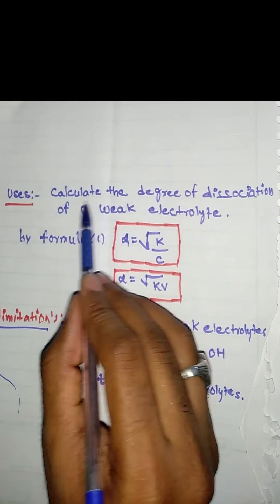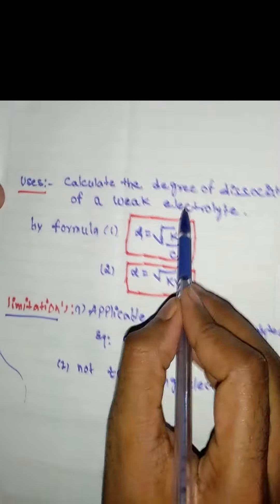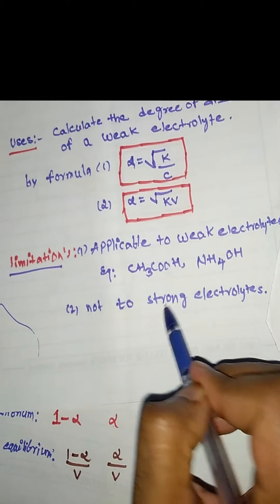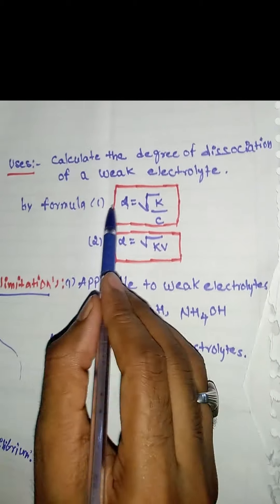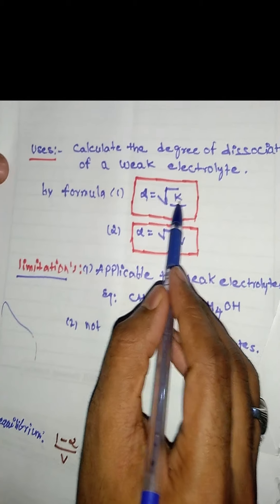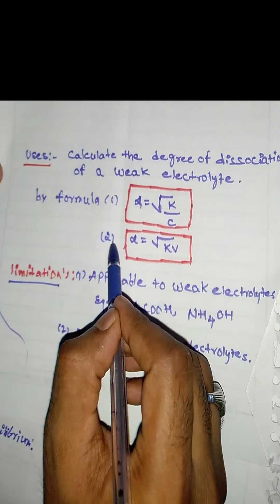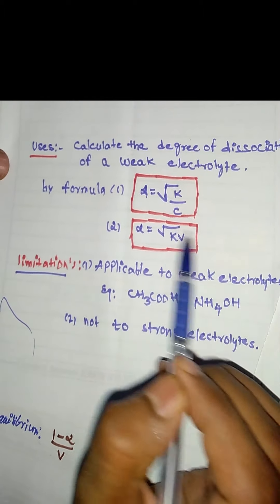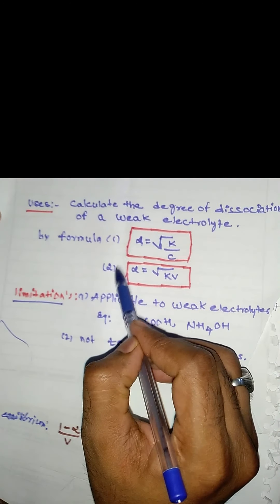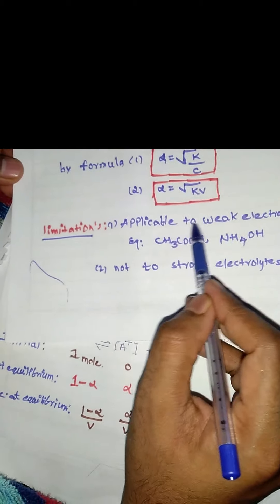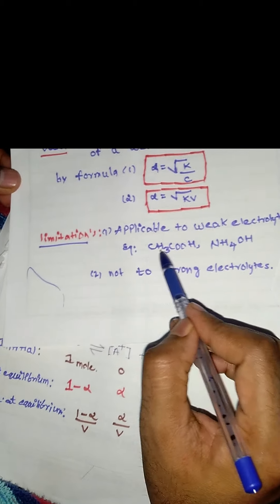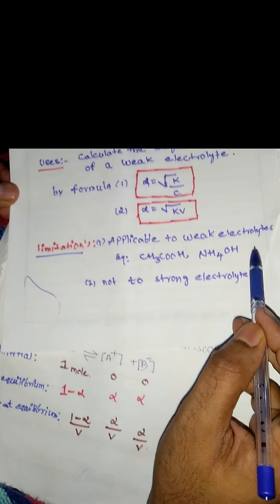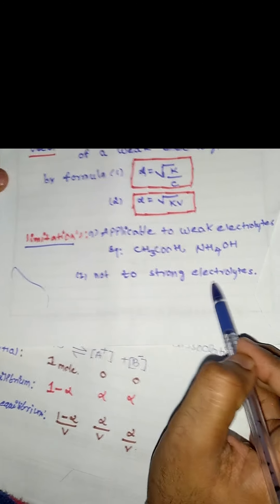It can be used to calculate the degree of dissociation of weak electrolytes, not strong electrolytes. The two formulas are: Formula 1 — alpha = √(K/C), and Formula 2 — alpha = √(K × V). Using either formula, we can calculate the degree of dissociation of a weak electrolyte. It is applicable to weak electrolytes such as acetic acid and ammonium hydroxide, not to strong electrolytes.